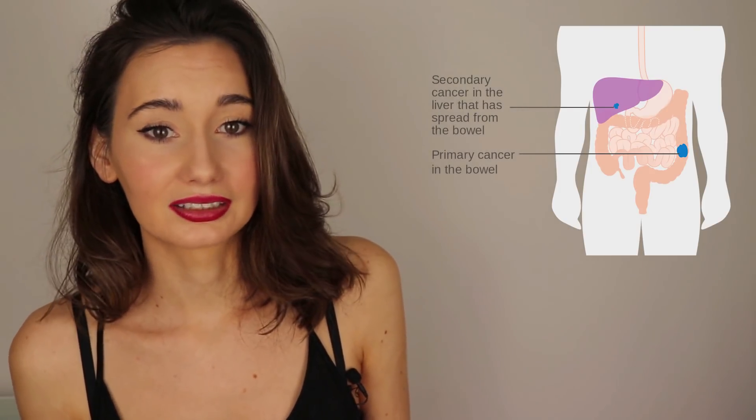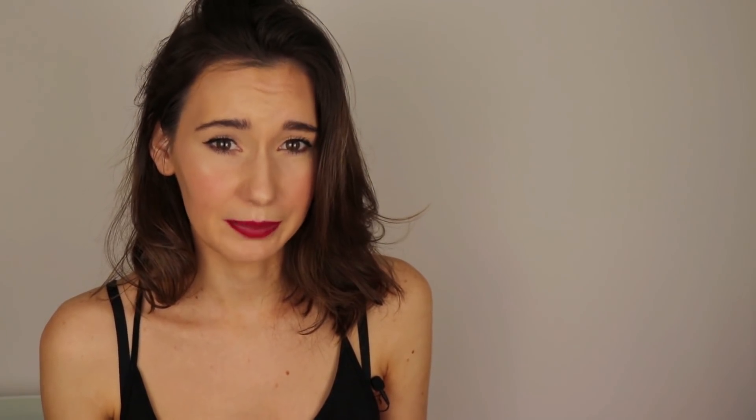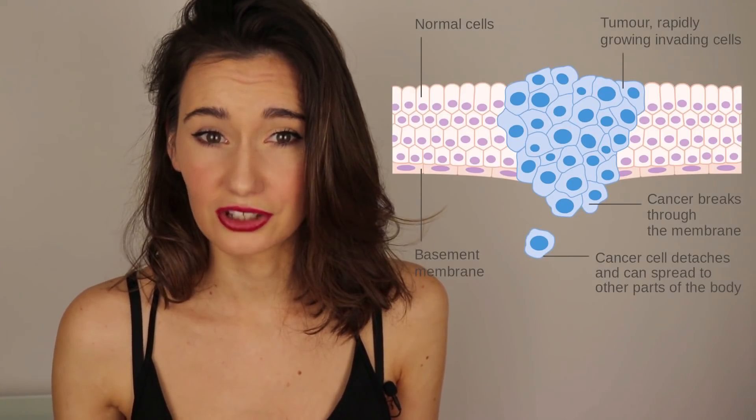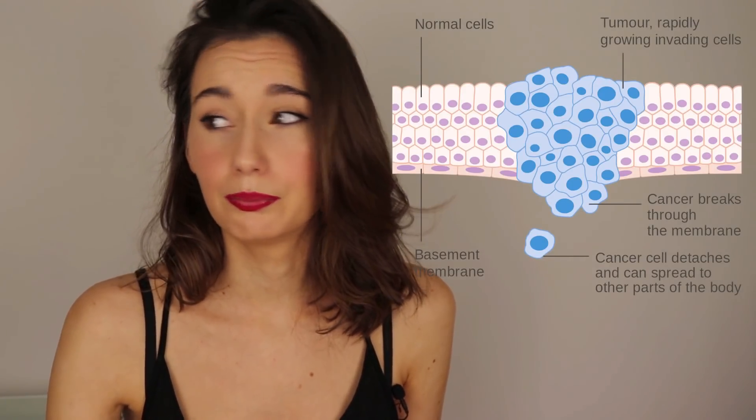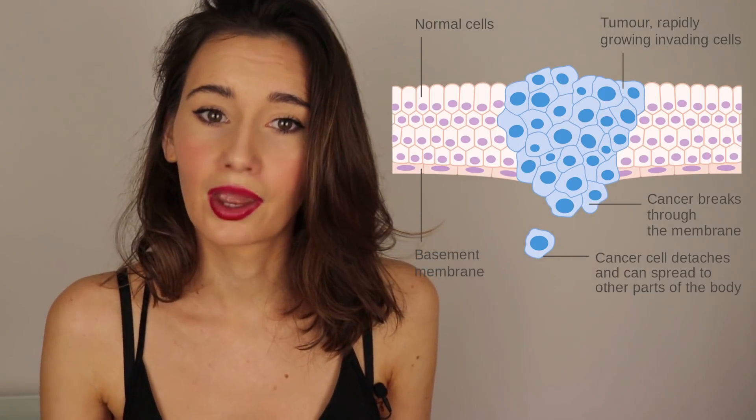You don't have bowel cancer and liver cancer, because the cancer cells in the liver are cancerous bowel cells — they aren't liver cells. Cancer cells can also spread to other parts of the body by breaking away from the primary tumour and travelling through the bloodstream or the lymphatic system.